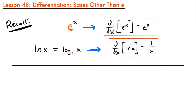We know that the derivative of e to the power of x is e to the power of x, and the derivative of the natural log function is 1 divided by x. But what if we had an exponential function or a logarithmic function where the base wasn't e? What if we had some exponential function a to the power of x, where a represents some positive real number — it could be 2, it could be 3, any positive real number — or what if we had a log function with a base of a?